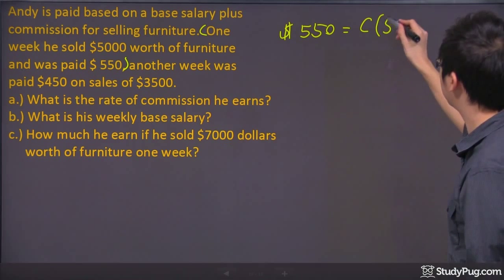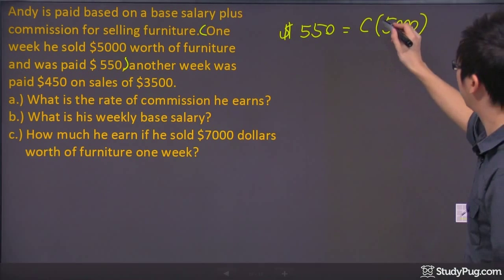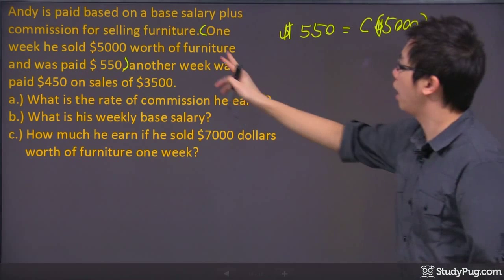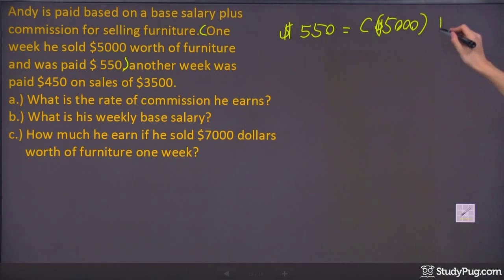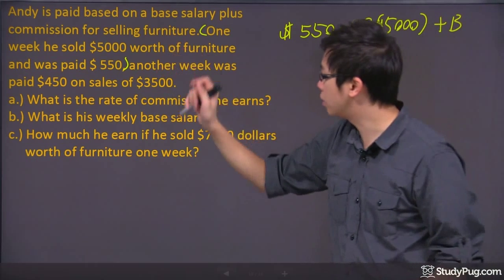But it was based on the $5,000 worth of furniture. There's $5,000 worth of the goods that he sold, and plus the base salary. We don't know the base salary, so let's put a B right there. That's your first equation for the first sentence right there.